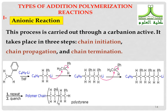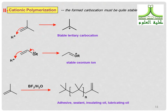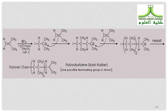An example is polystyrene from styrene. Second, cationic polymerization — the formed carbocation must be quite stable, like a tertiary carbocation or a stable oxonium ion. The formation of polyisobutylene, or butyl rubber, is an example.